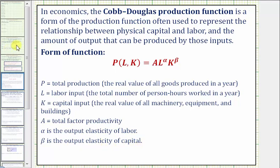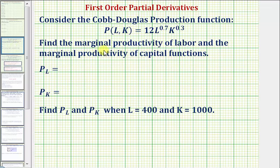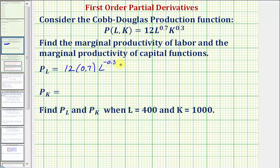Going back to our example, we'll find the marginal productivity of labor function by determining the partial derivative with respect to L. To do this, we differentiate with respect to L, treating K as a constant. So we'd have 12 times — differentiating with respect to L — we would multiply by 0.7. Then we'd have L raised to the power of 0.7 minus 1, that's negative 0.3, and we're treating K as a constant.